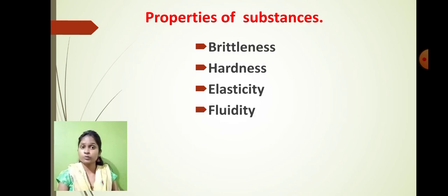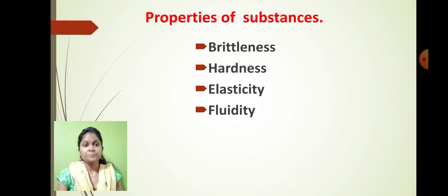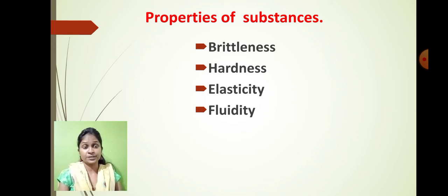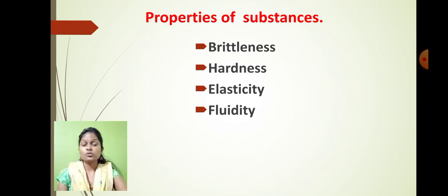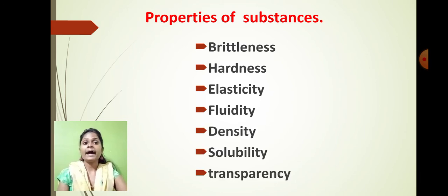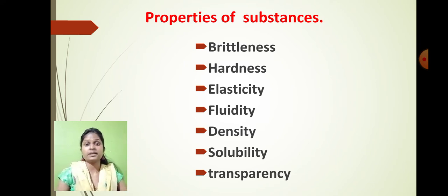Then we have learnt about fluidity. Liquids have the fluidity property — whenever liquid spills on the floor, it flows according to the slope direction. That is called fluidity. So all these four properties we have already discussed in the last lecture. There are three properties which are still remaining that we are going to discuss right now: density, solubility, and transparency.